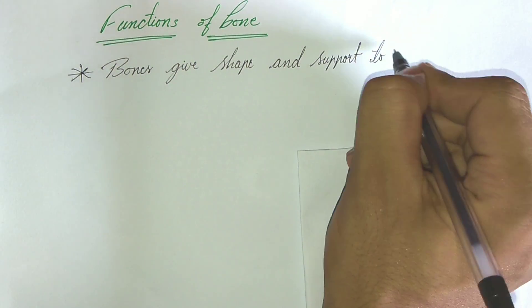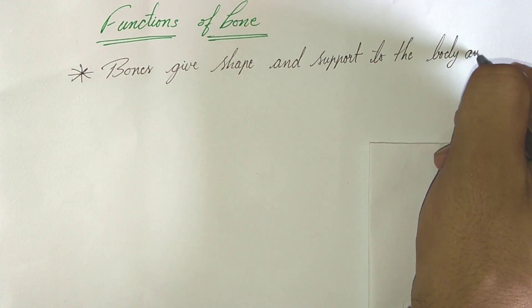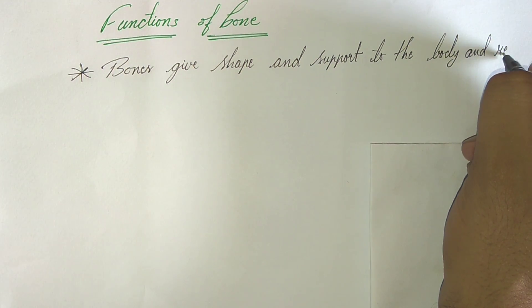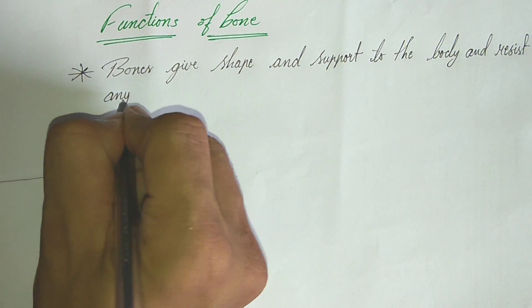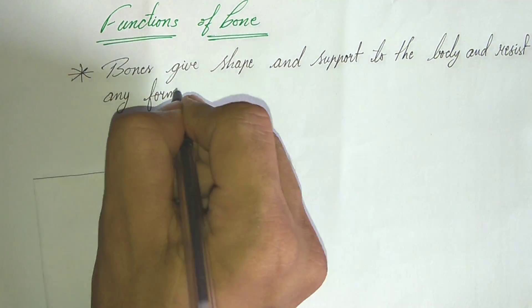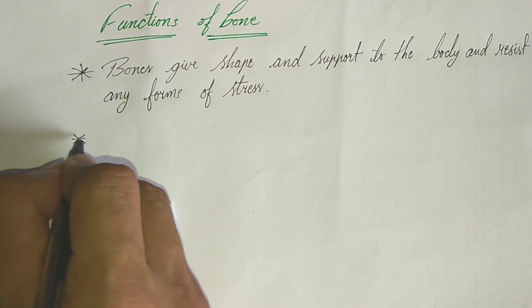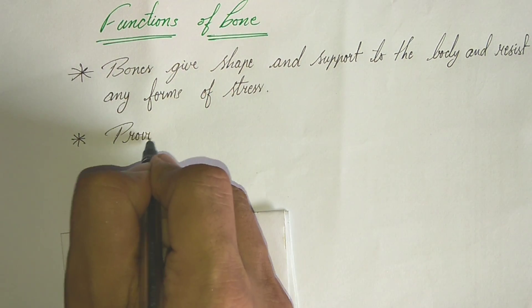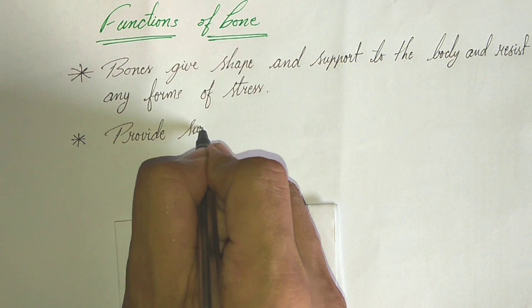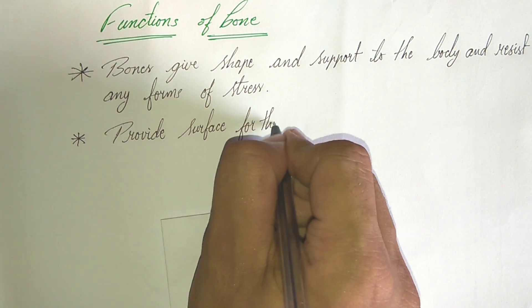Bones give shape and support to the body and resist any form of stasis. So generally first function of bone is that it gives shape and support to the body and resist from any kind of stasis.